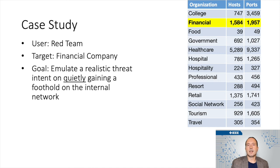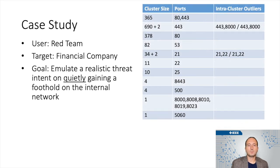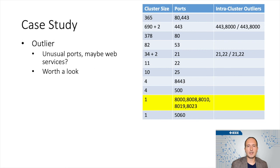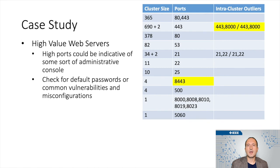So here's a case study where a red team is targeting this financial company highlighted here. We want to emulate a realistic threat that wants to quietly gain a foothold on the internal network. This is what it looks like when run through our algorithm — you can already see the clusters taking shape. Let's see how a red team might look at this data. First, this outlier down here stands out — unusual ports, maybe web services, but it's worth a look. It doesn't look like things that should necessarily be internet-facing. Next, I've got these non-80 and 443 web servers that I really want to take a close look at, because they could be administrative interfaces with default passwords worth looking into.